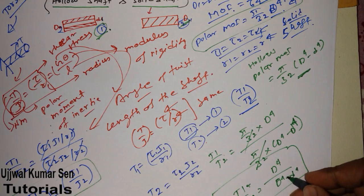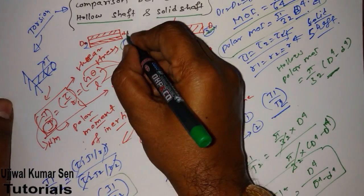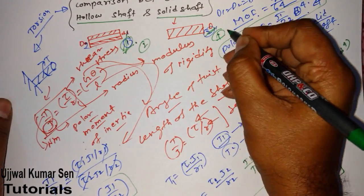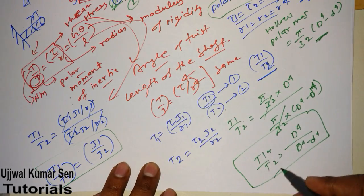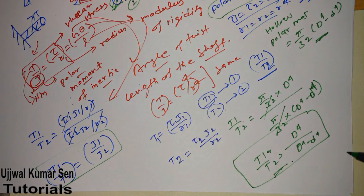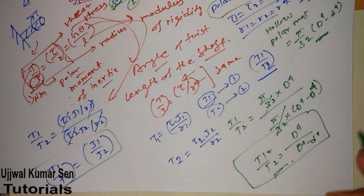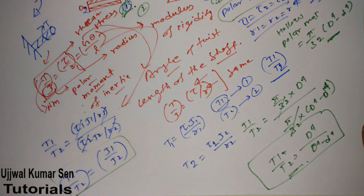There is actually a small mistake — T1 was considered as the hollow shaft and T2 as the solid shaft. So in the ratio, just consider T1 as the solid shaft and T2 as the hollow shaft, and then the equation will be correct. Thanks for watching, see you soon in the next video.